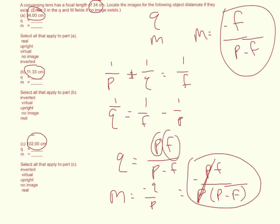If you plug in the P is 34, as in part A, then you have 34 minus 34. You get 0. And any time you divide by 0, the number is undefined.